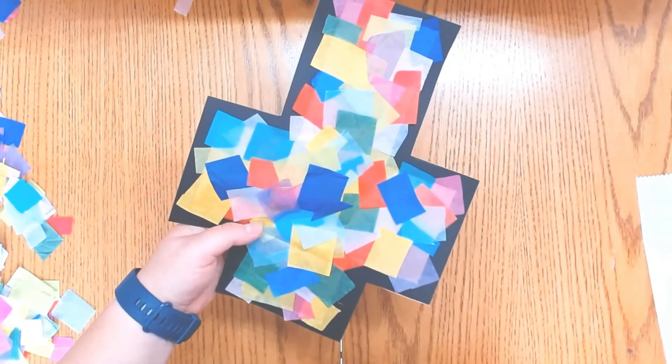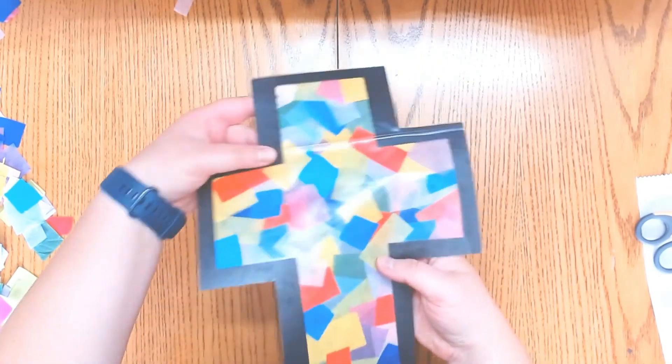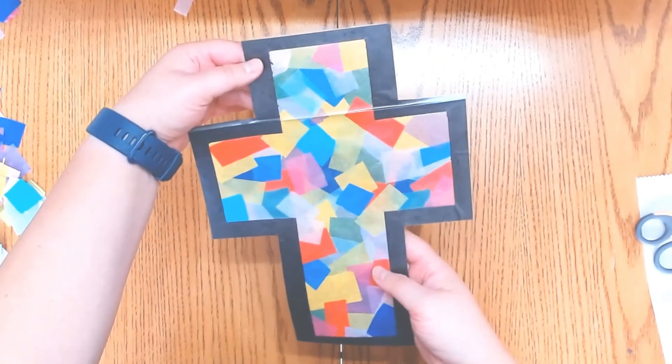Okay. And as we finish cutting the rest of the adhesive paper off, we can flip it over and you can see the final result, which is a stained glass cross.